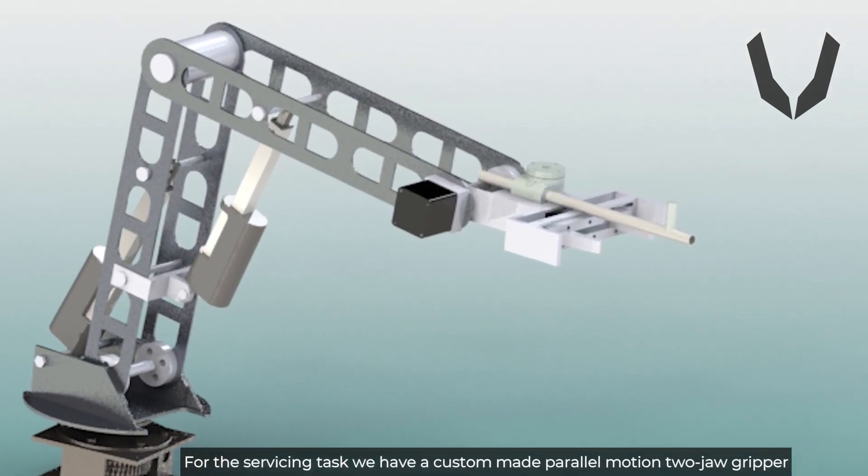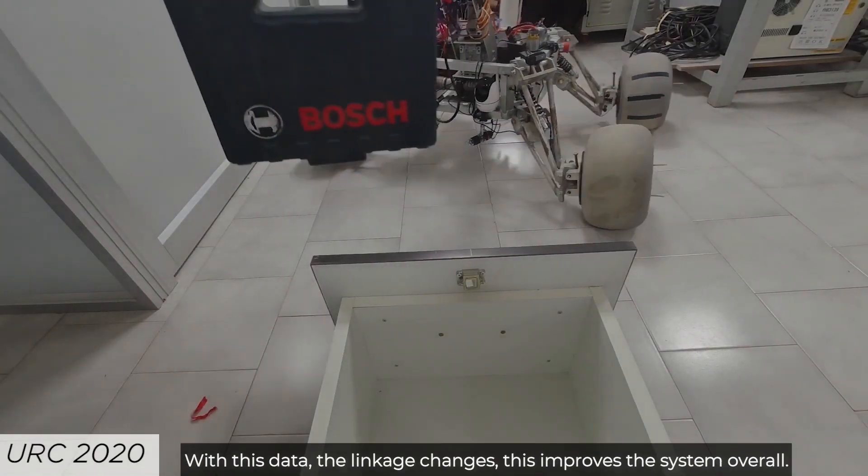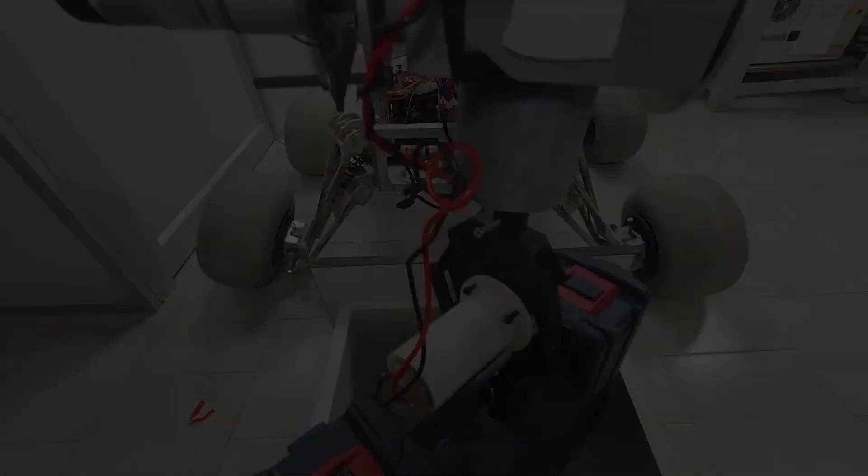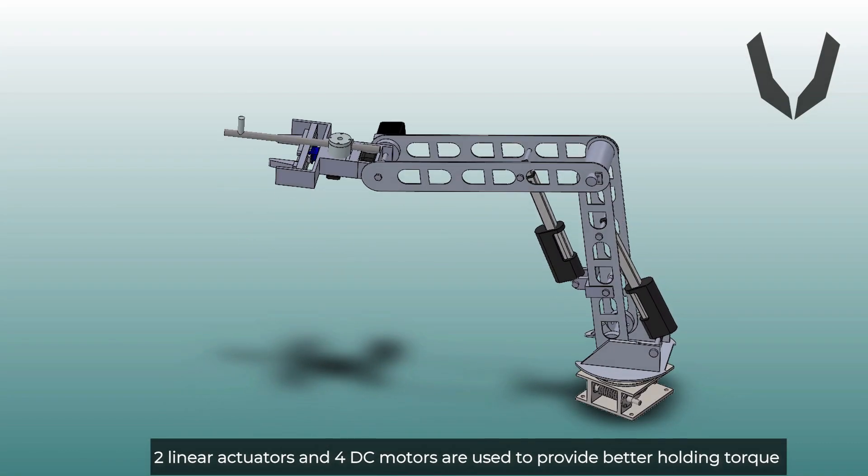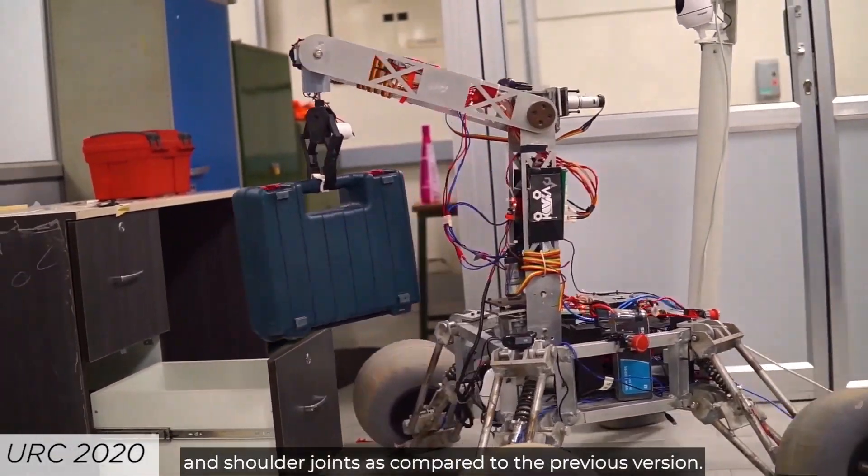For the servicing task, we have a custom-made parallel motion two-jaw gripper with a jack screw mounted on top which gives us higher precision. Two linear actuators and four DC motors are used to provide better holding torque and make for smoother movements at the elbow and shoulder joints as compared to the previous version.